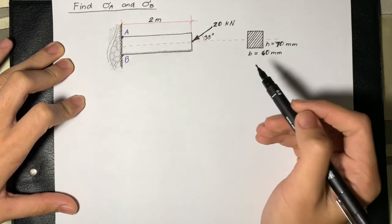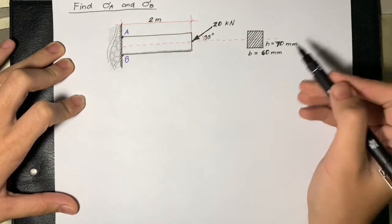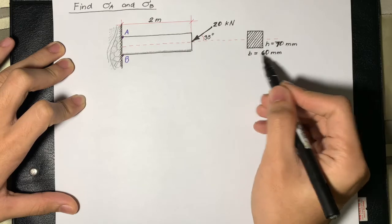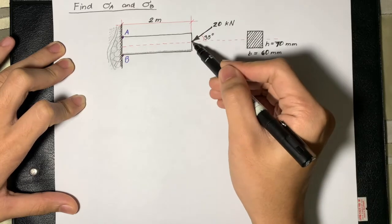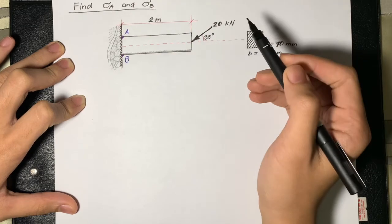The length of the beam is 2 meters and the dimensions of the cross-sectional area is 70 mm by 60 mm. We also have an applied force at 35 degrees along the central axis.